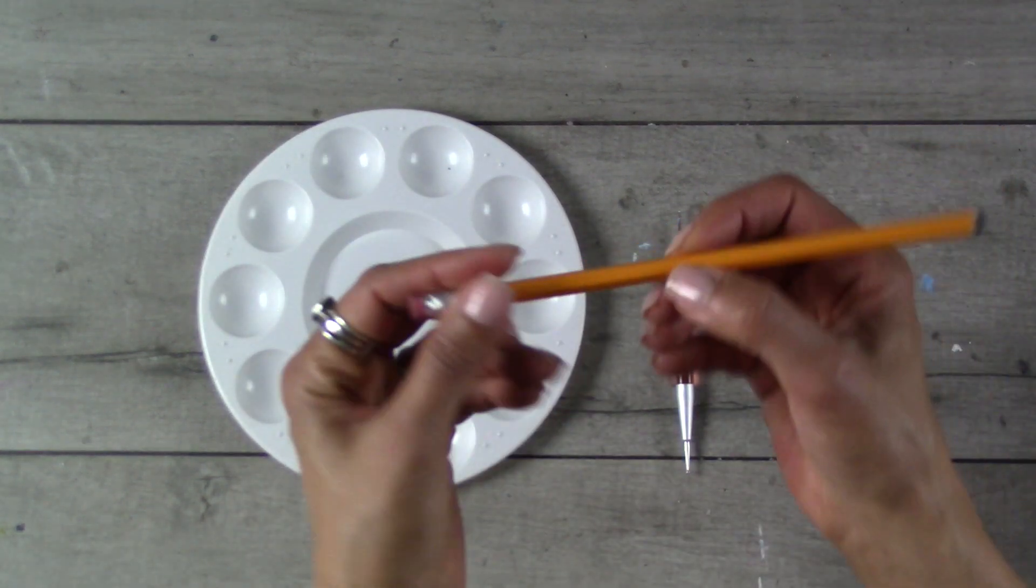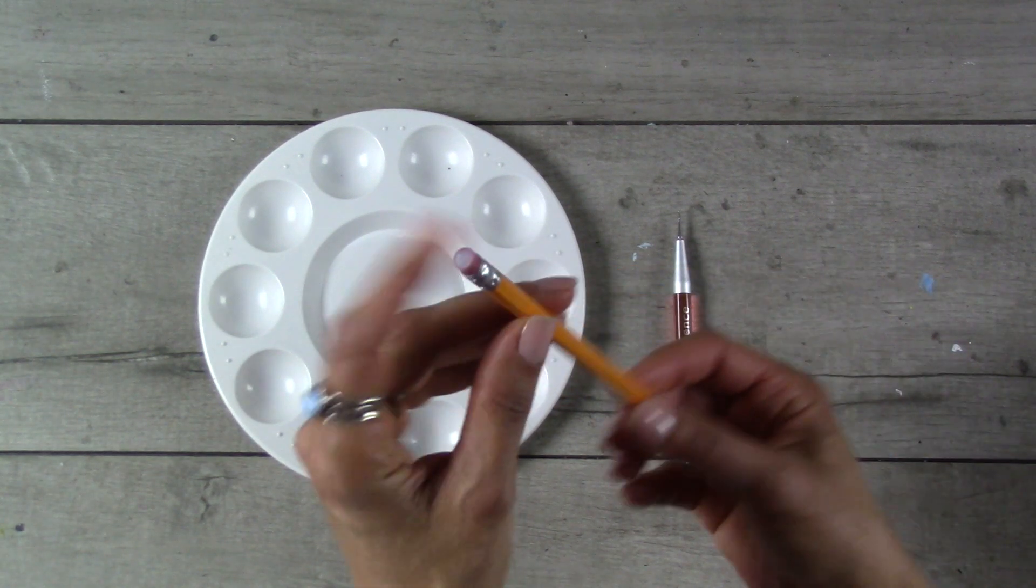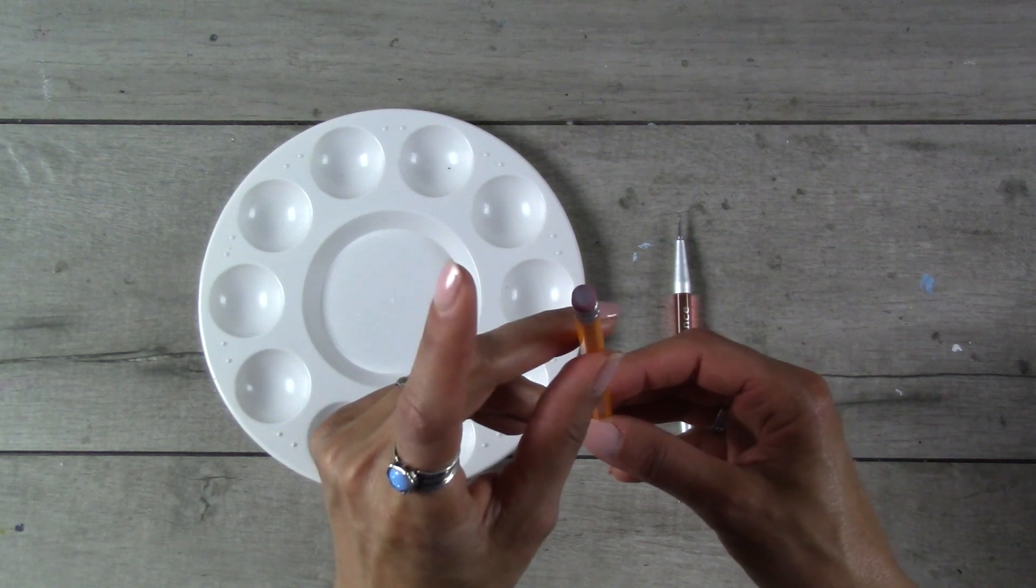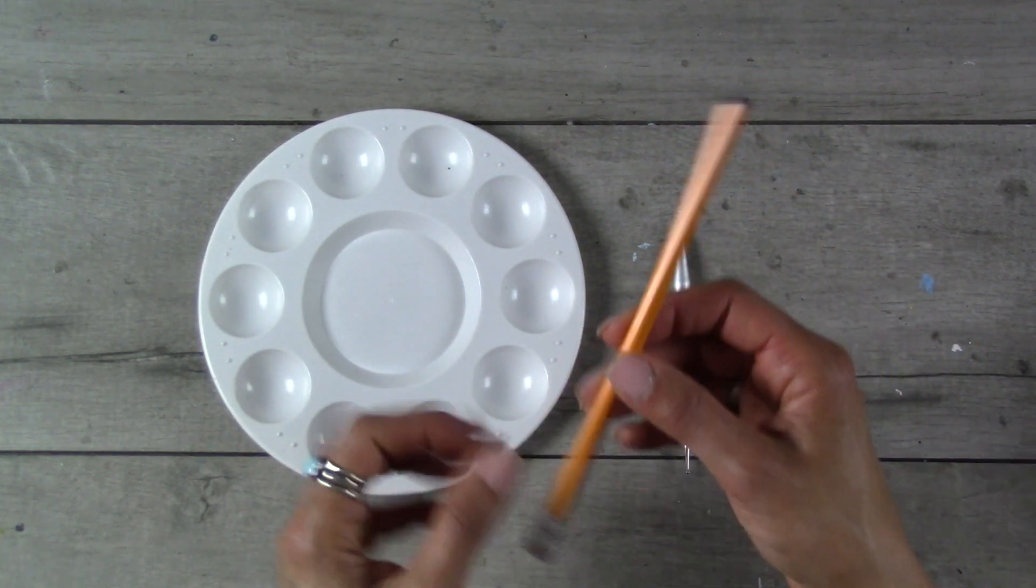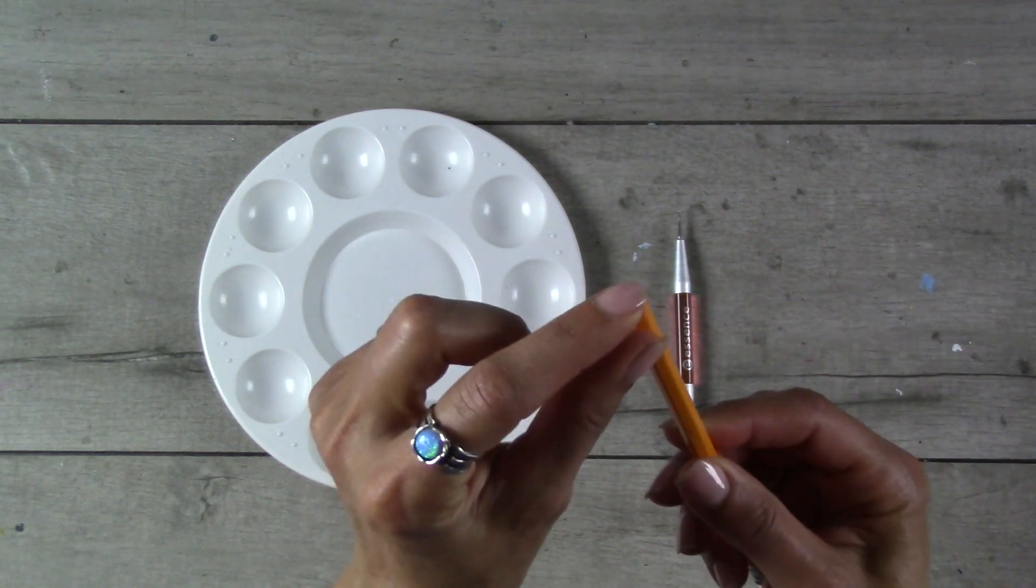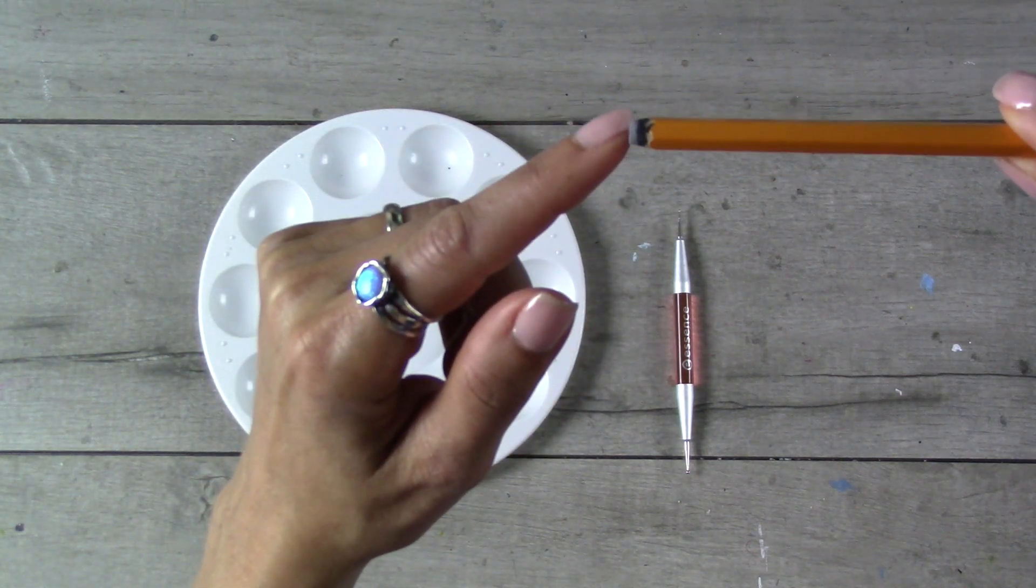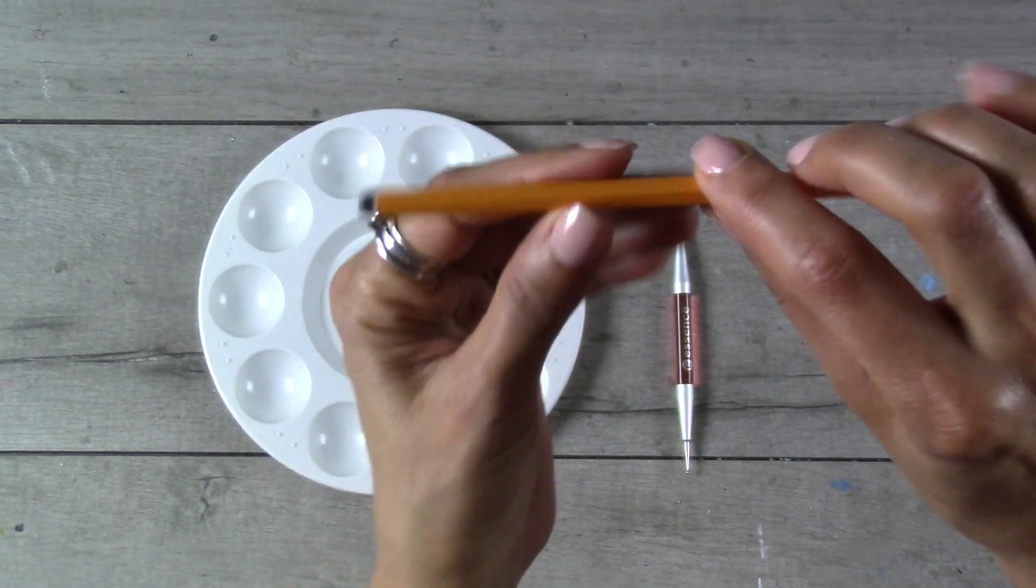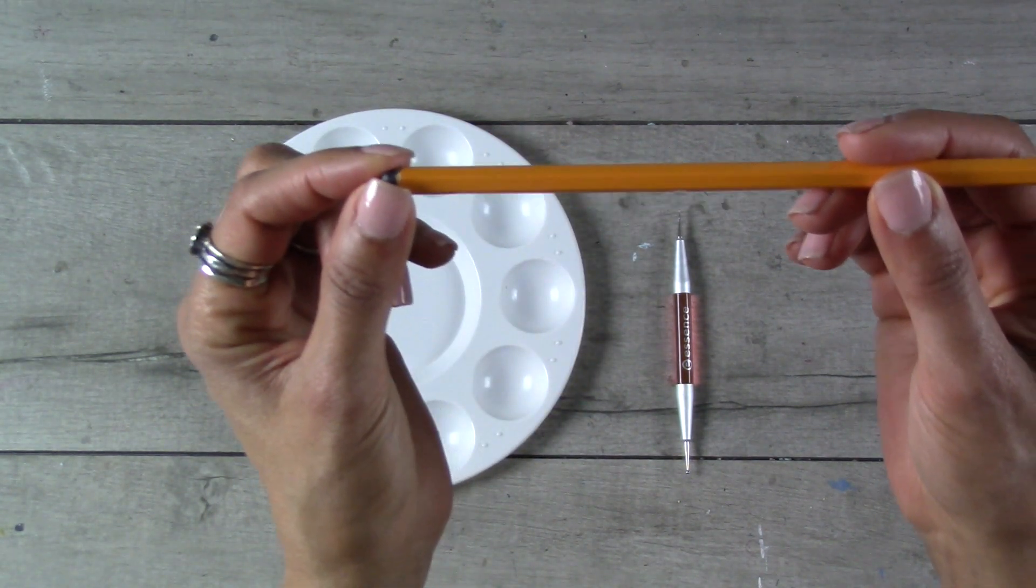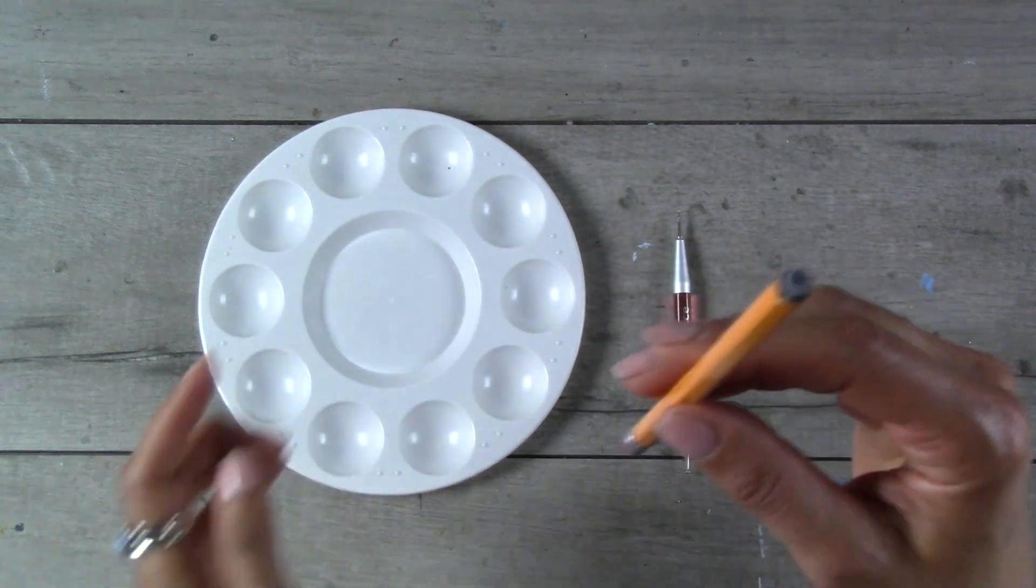I also recommend getting a package of wooden pencils. You want to get unsharpened pencils because while the eraser end works great for making large circles, the other end - the wooden end with the lead in it - is great for making smaller size circles, and you can adjust this by sharpening it. If you turn a hand sharpener just a few turns, you'll get a circle that's slightly smaller than the eraser end. Do a few more turns and it gets even smaller. That way you have complete control over the size of the dots. You can vary from the size of the eraser all the way down to the smallest dots.